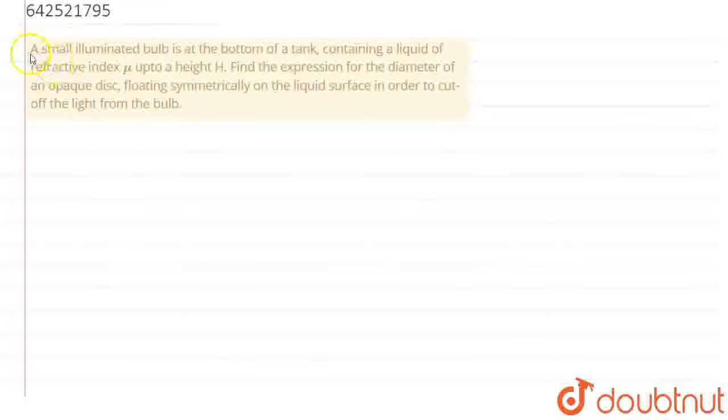Hello everyone, let's start this question. The question says that a small illuminated bulb is at the bottom of a tank containing a liquid of refractive index mu up to a height h. We have to find the expression for the diameter of an opaque disk floating symmetrically on the liquid surface in order to cut off the light from the bulb.